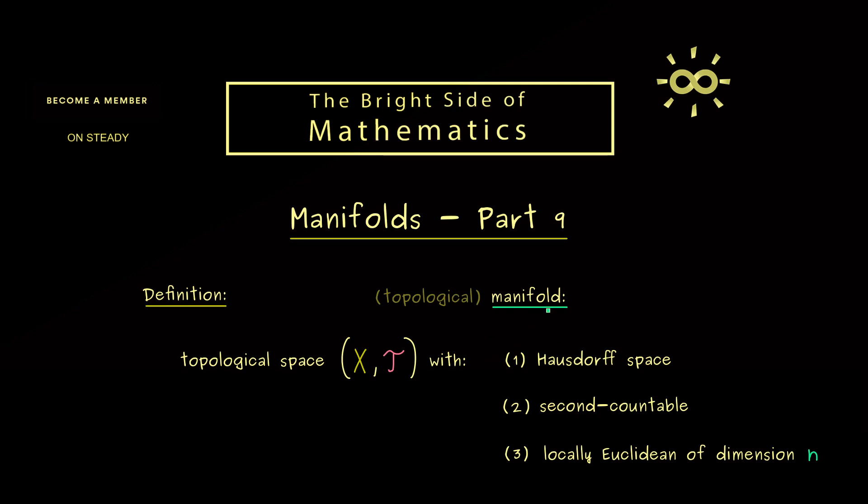However, what we always have is a fixed dimension n. Therefore, we should include this here. So you see we speak of locally Euclidean of dimension n in the natural numbers. And for this reason we also say we have an n-dimensional manifold.